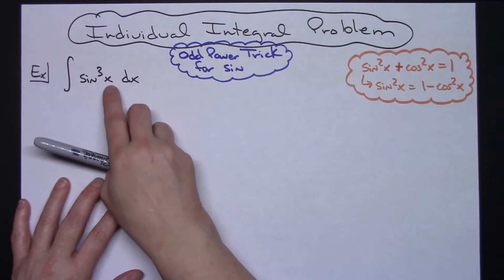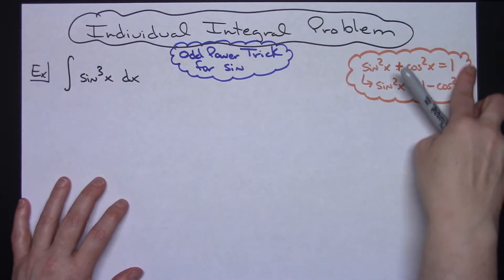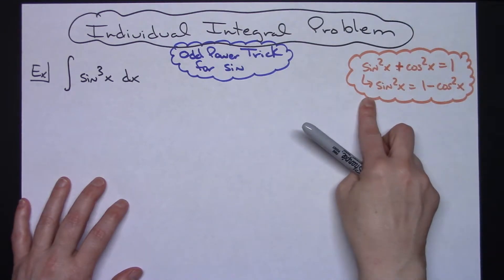This is sine to the third. This trick works really nicely as long as you've got an odd power, because we're going to take advantage of our Pythagorean identities.